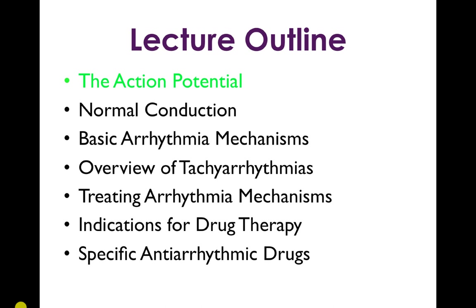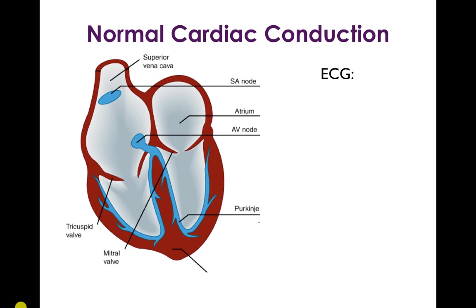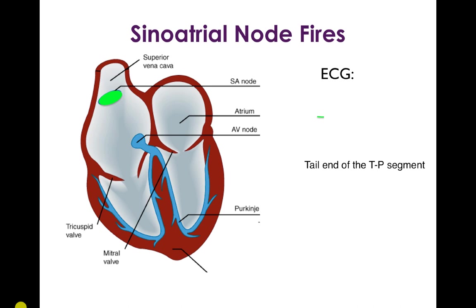Now let's look at how normal conduction occurs in the heart. The SA node is located at the top of the right atrium, the AV node is at the junction between the atrium and the ventricles, and the Purkinje fibers form the bundle branches — the right bundle branch to the right ventricle and the left bundle branch to the left ventricle. The first event is the sinus node firing, which is electrically silent on the EKG because it's a small amount of tissue depolarizing — though in the electrophysiology lab, a catheter next to the SA node would detect that electrical event.